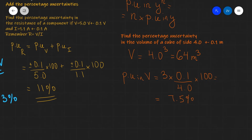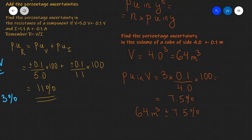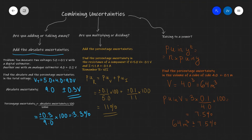So our calculation for the volume can be written as 64 cubic meters plus or minus 7.5%. To summarize: if we are adding or taking away quantities, we add the absolute uncertainties. If we multiply or divide quantities, we add the percentage uncertainties. If we raise a quantity to a power, we multiply the percentage uncertainty in that quantity by the power itself.